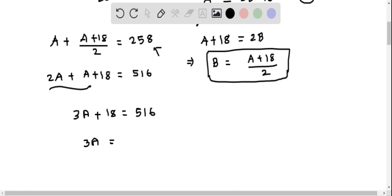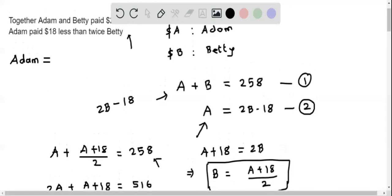Now divide both sides by 3. This gives A = 498 ÷ 3 = 166. So Adam's amount is $166.